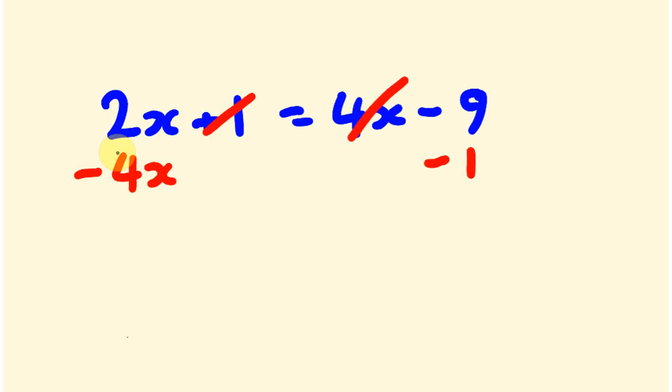So 2x take away 4x is minus 2x. Be very careful with that. And minus 9 minus 1 is minus 10.